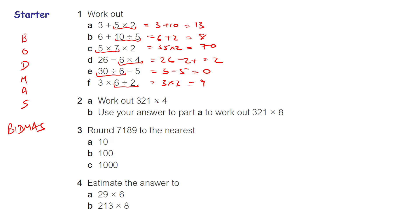Now let's look at question 2a: 321 times 4. Remember we set it out in columns — four ones are four, four twos are eight, and four threes are 12, giving us 1284.